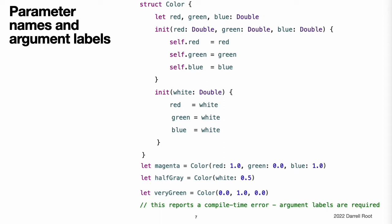Both initializers can be used to create a new Color instance by providing named values for each initializer parameter. Note that it is not possible to call these initializers without their argument labels. Argument labels must always be used in an initializer if they are defined, and omitting them is a compile time error.